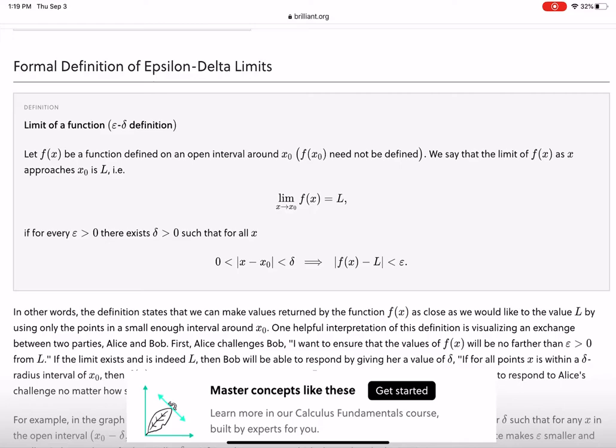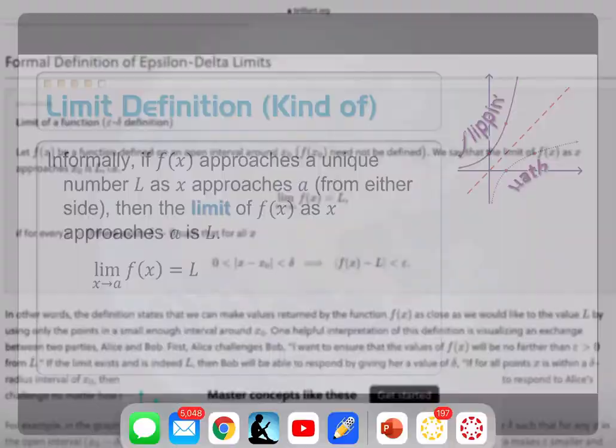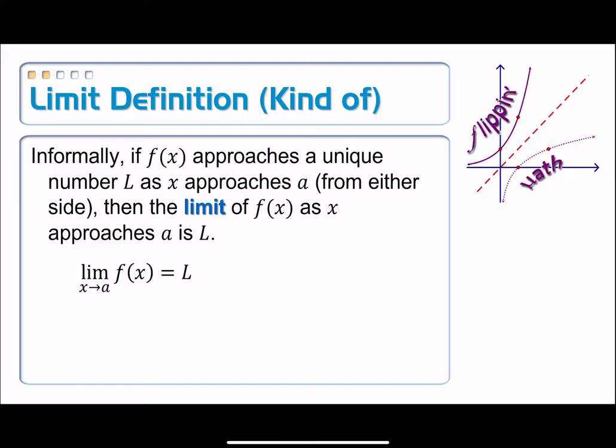Well, if you are interested in that, I'm going to allow Salman Khan to explain it to you. For the rest of us though, we are just going to be satisfied with this informal definition of a limit, which goes like this: If f of x approaches a unique number L as x approaches A from either side, then the limit of f of x as x approaches A is L.